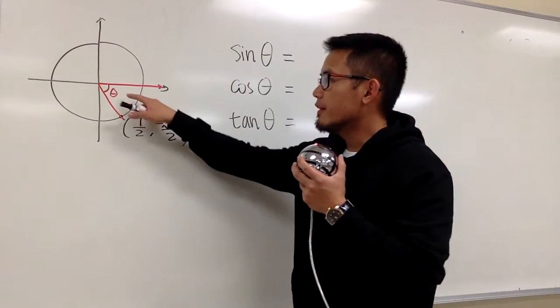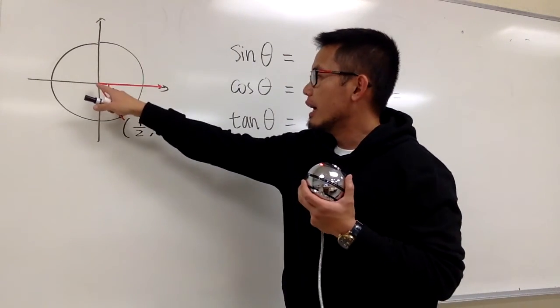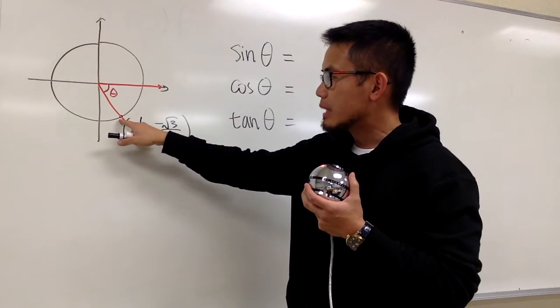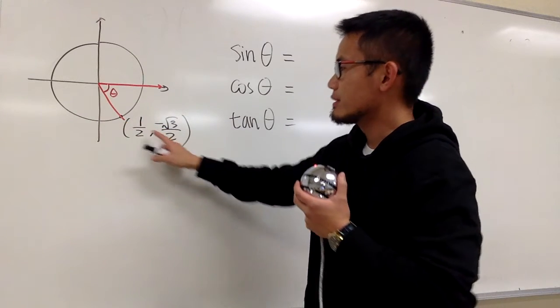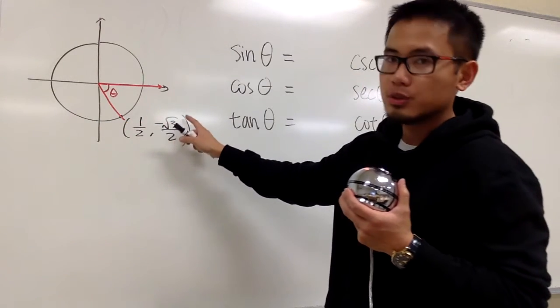In this question, we are given the angle theta with its terminal side intersecting the unit circle at the point (1/2, -√3/2).